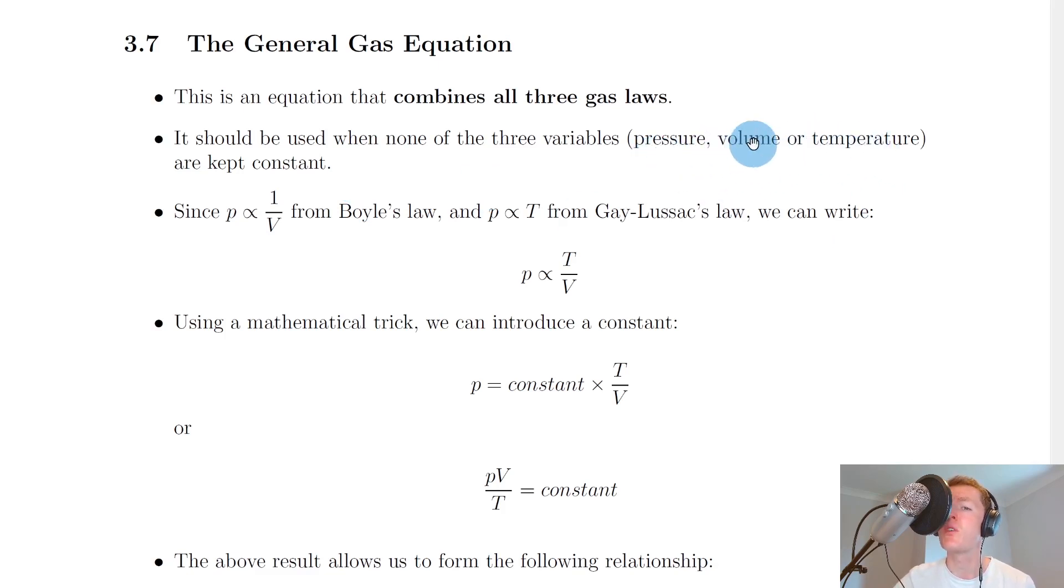So for the pressure and volume law it was temperature that was kept constant, for the pressure and temperature law it was volume that was kept constant, and for the volume and temperature law it was the pressure that was kept constant. So the general gas equation is used when none of these things are kept constant, they're all changing.